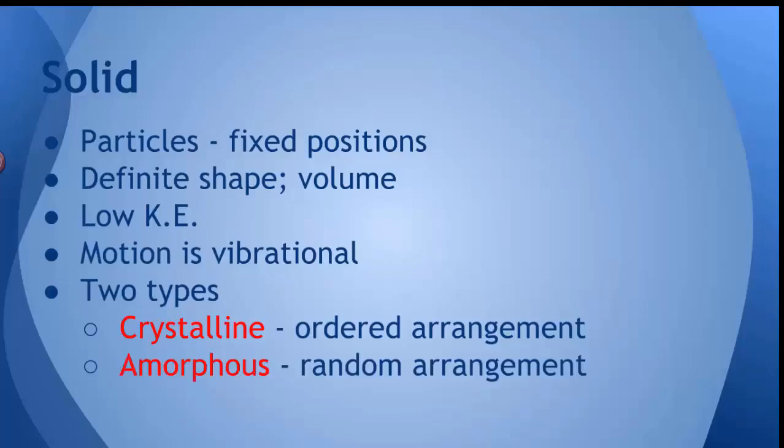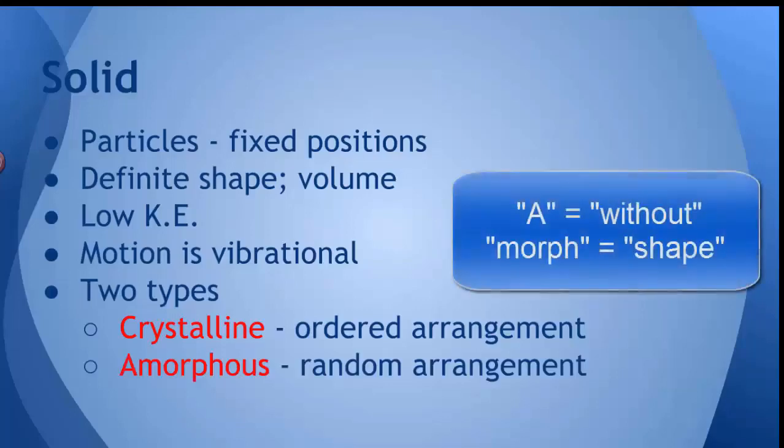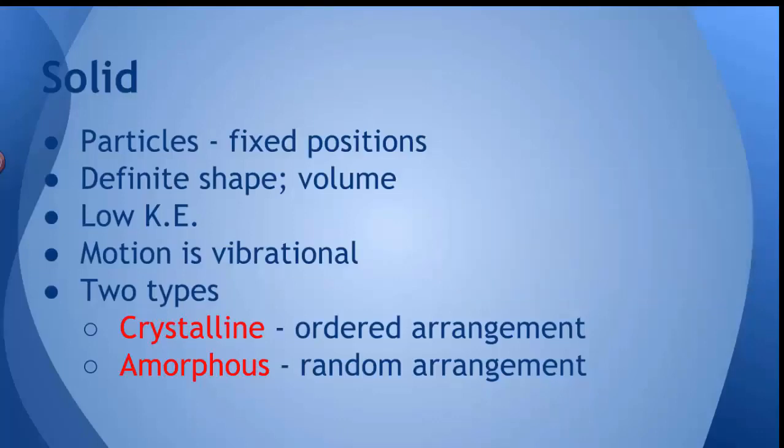The other type of solid is called an amorphous solid. The word amorphous, morph means shape. And when you put the prefix a in front of it, it means without. So amorphous means without shape. Those particles are arranged randomly. And it doesn't really matter where they are. They don't have any pattern or any discernible order to them. Glass is an example of an amorphous solid. The particles in glass are stuck in any random arrangement. And so that means glass has various shapes that you can put it into, depending on how you let that glass harden.